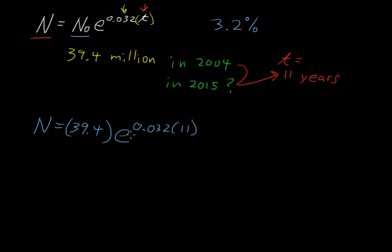We have to multiply 0.032 times 11 first. And then take e to that power. And what we get is n equals 39.4 times e to the 0.352.